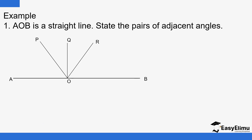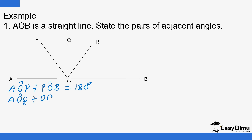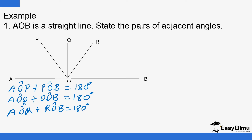We also state the pair of adjacent angles. For example, angle AOP and angle POB will sum up to 180 degrees. Similarly, angle AOQ plus angle QOB again equals 180 degrees. In short, any pair of adjacent angles on a straight line — such as AOP and POB — must add up to 180 degrees.